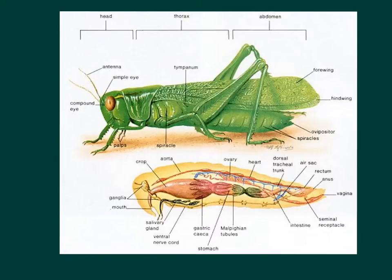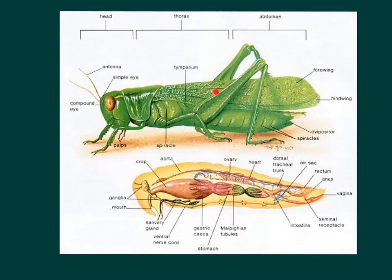That's another difference between the cricket and the grasshopper — the tympanum is in a different location for the cricket. You can see some of the spiracles in this picture; they're these little white dots right along this area. The ovipositor right here is where they deposit their eggs. And there is a forewing, which is the wing that's on top, and a hindwing, which is on the bottom.